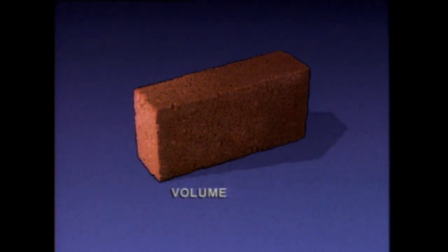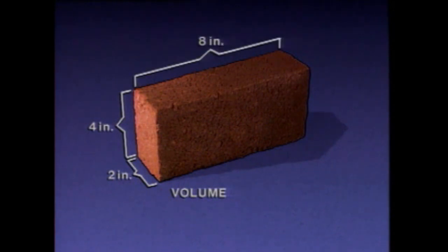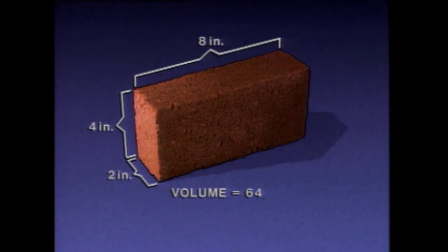The volume of a rectangular solid, like this brick, can be calculated by multiplying three length measurements together. As we just saw, this surface is two inches by four inches. The third measurement is eight inches. So two times four times eight equals sixty-four. Since volume is a three-dimensional measurement, it's usually expressed in cubic units — in this case, cubic inches.